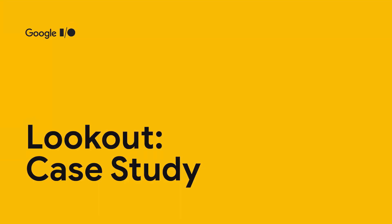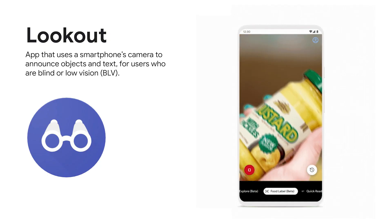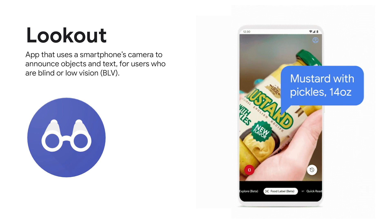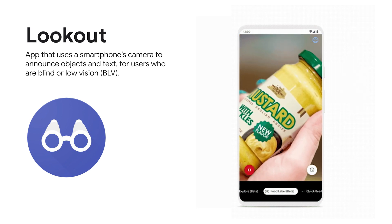And now my colleague Scott is going to talk about Lookout. Thanks, Tom. I'm Scott Adams, and I work in research as the product manager on Lookout. I'm here to talk about a case study in ML applications for people with visual impairments. Lookout is an app that uses the smartphone's camera to recognize objects and text for users who are blind or low vision.